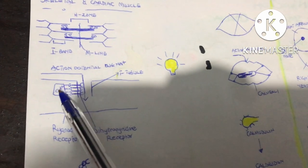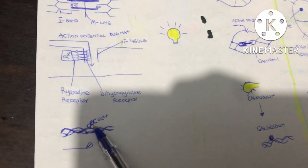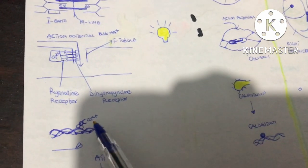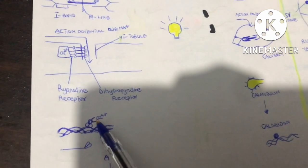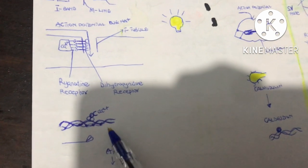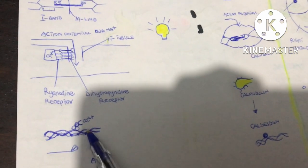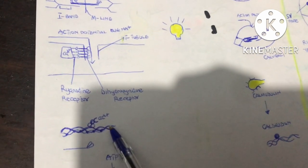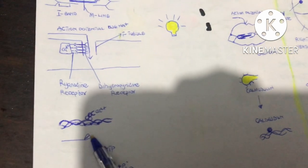The calcium released from the endoplasmic reticulum binds to troponin C (in skeletal and cardiac muscle). This causes troponin to undergo a conformational change; since troponin is attached to tropomyosin — which blocks the myosin binding sites on actin in the relaxed state — tropomyosin also undergoes a conformational change, exposing the myosin binding sites on actin.